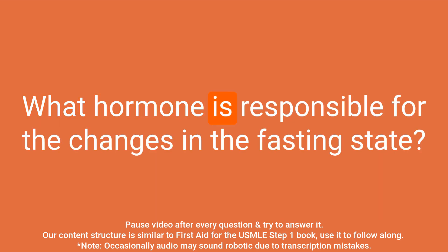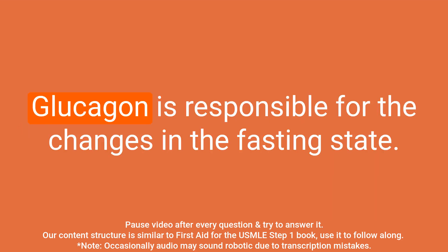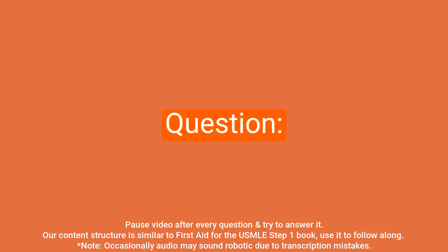Question: What hormone is responsible for the changes in the fasting state? Answer: Glucagon is responsible for the changes in the fasting state.